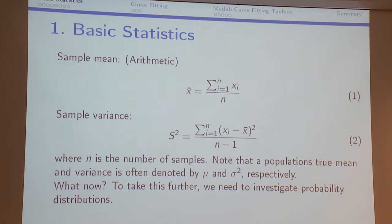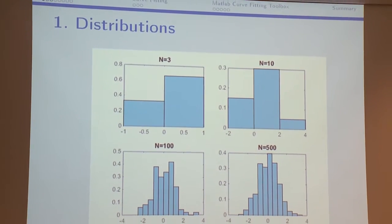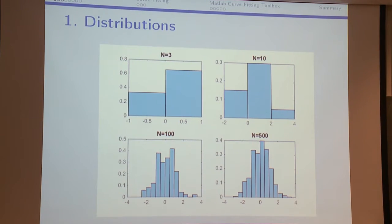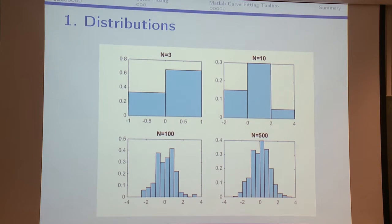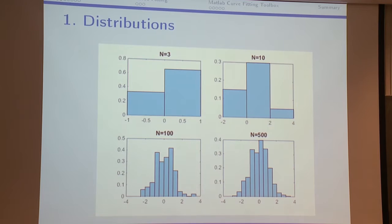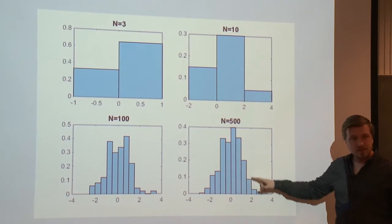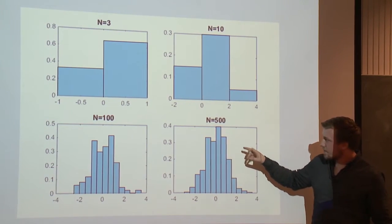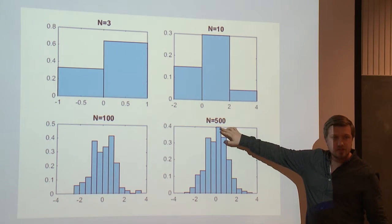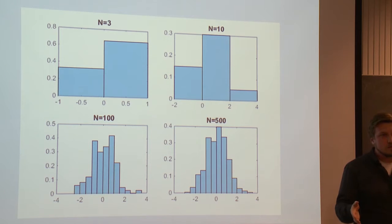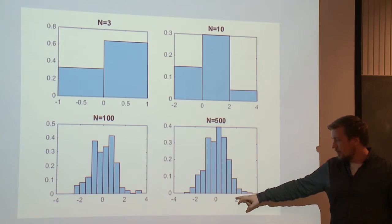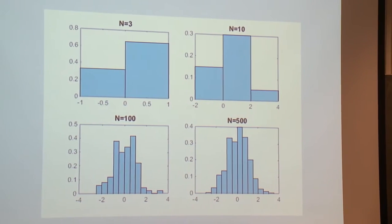Now I want to show you probability distributions. Imagine that you're taking first three experiments, you put them into histograms, and then you check how many percentages are in each bin. For example, between minus one and zero I have one value — so that's a third — and two thirds in the other bin. You repeat this with more experiments and you can see that you would get some kind of distribution. You're most likely about 40% chance of getting around the mean, around zero, and some percent likelihood of getting out further.